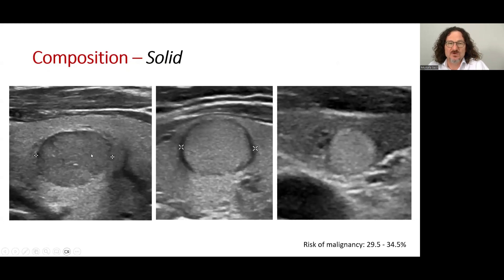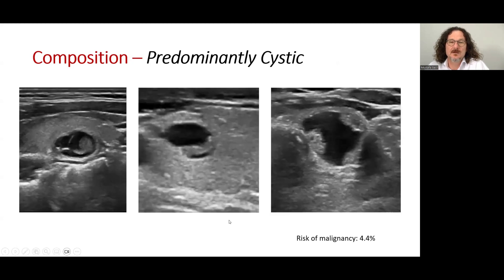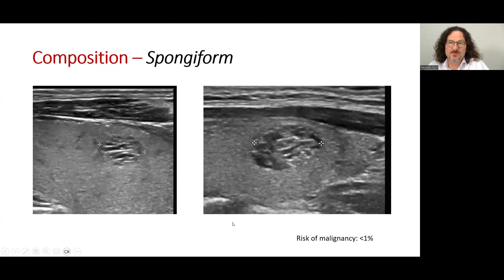These are examples of solid nodules: a hypoechoic solid nodule when compared to parenchyma, an isoechoic solid nodule, or a hyperechoic solid nodule. These are examples of predominantly solid lesions with cystic spaces less than 50%, and examples of predominantly cystic nodules with the cystic component predominant and one or more solid components. These are examples of spongiform nodules, which appear like a sponge.